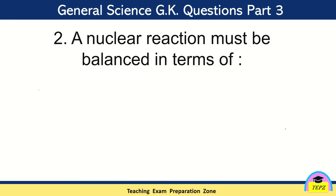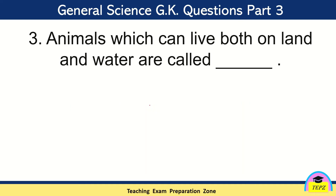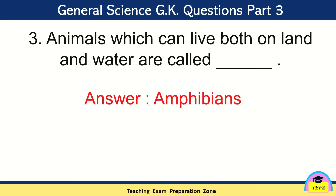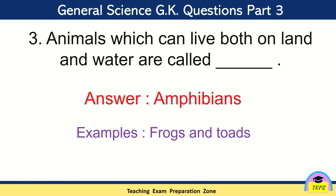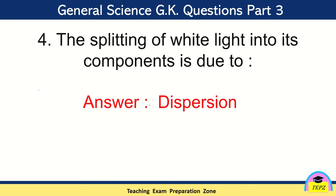A nuclear reaction must be balanced in terms of mass and energy. Animals which can live both on land and water are called amphibians — examples are frogs and toads. The splitting of white light into its components is due to dispersion.